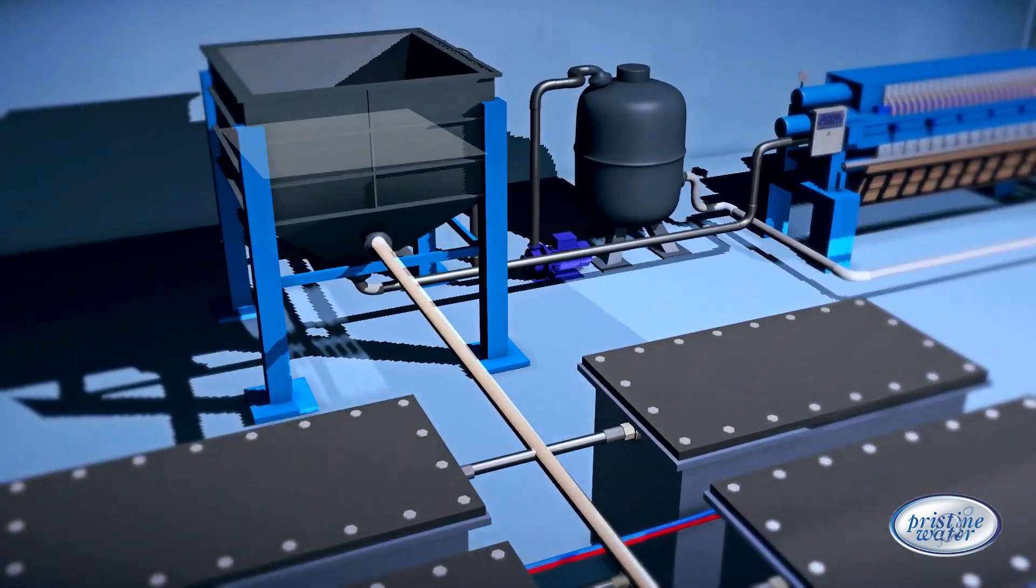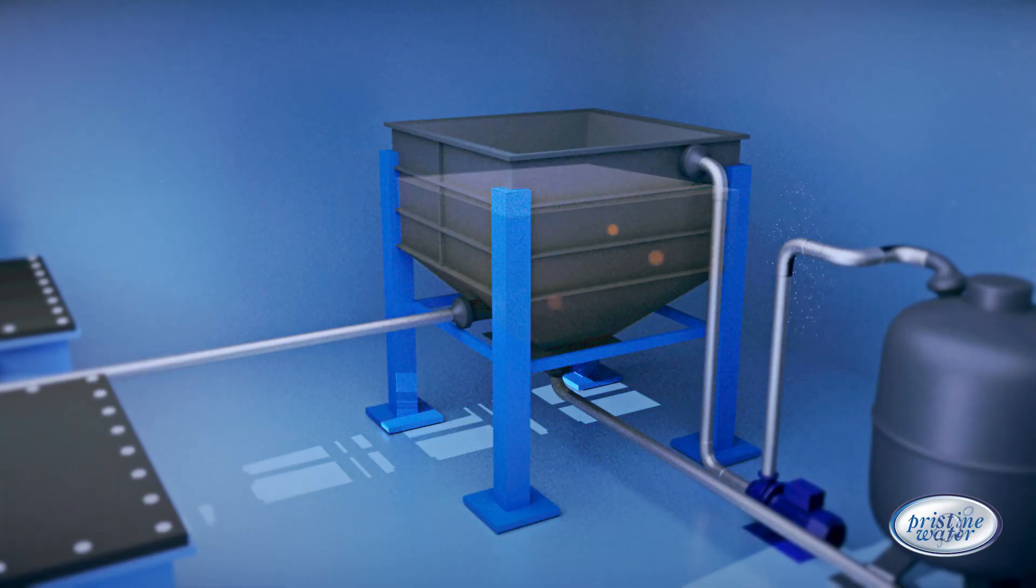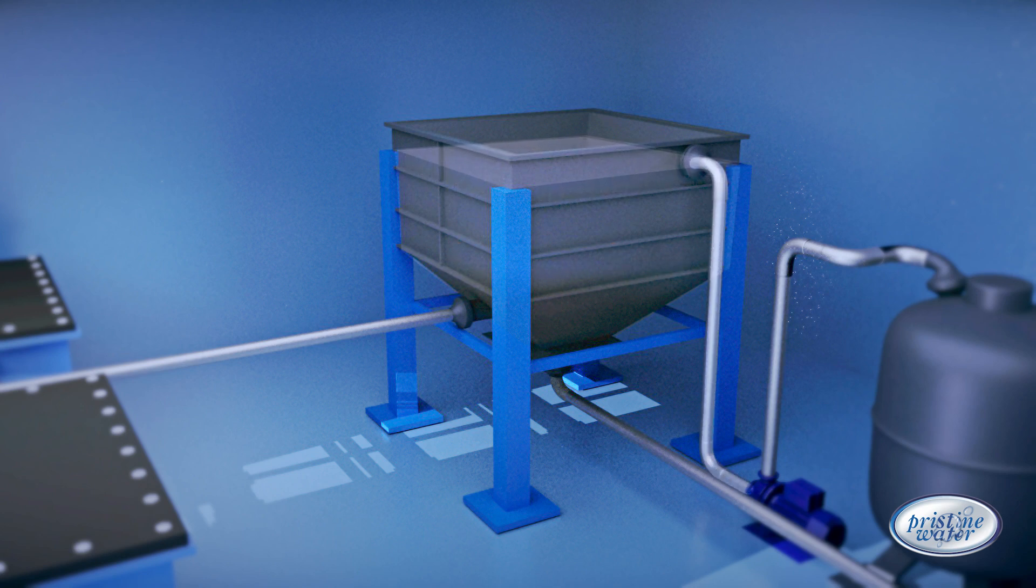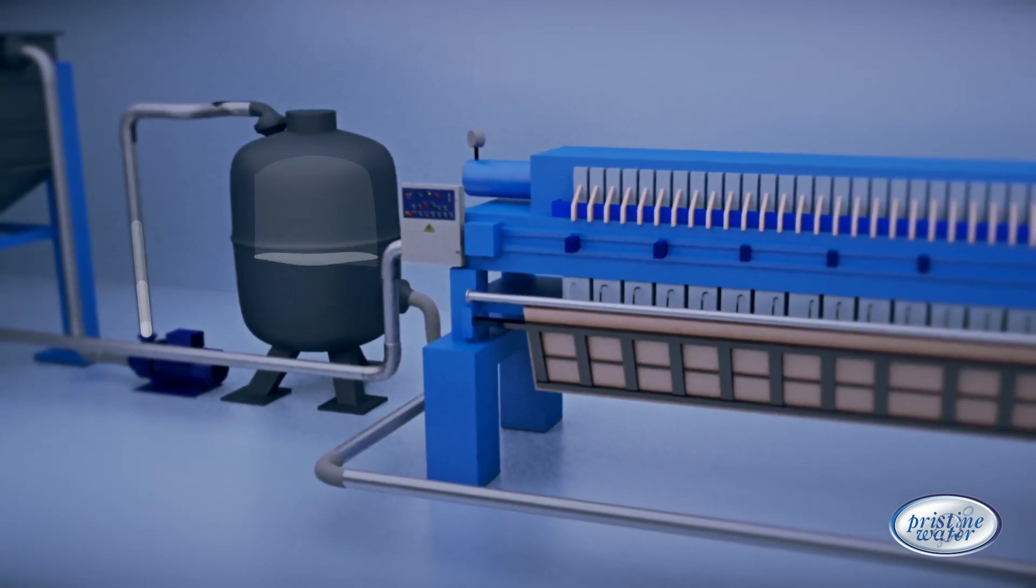Electrocoagulated water flows through a settling tank where the flocks grow in size and settle down. The clear water enters the media filter where all the remaining particles are removed.